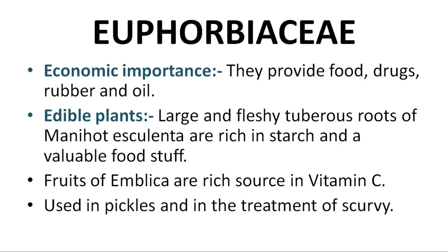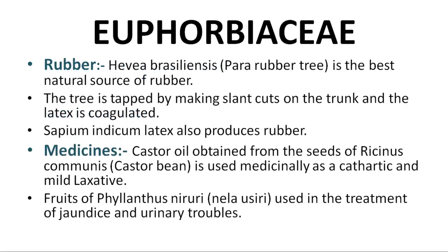Emblica (amla) is a rich source of Vitamin C, used in pickles and in treatment of scurvy. Rubber is obtained by tapping the tree — slant cuts are made on the trunk so that latex coagulates and gives us rubber.